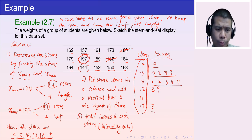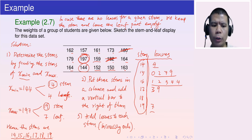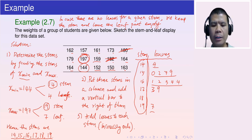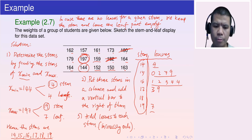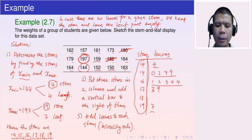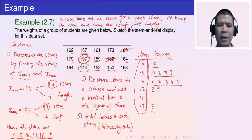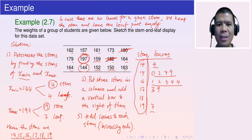To summarize the steps for a stem and leaf display: Step 1, determine the stems by finding stems of the minimum and maximum values. Step 2, put the stems in a column and add a vertical line to the right. Step 3, add leaves to each stem in increasing order. That's all for today's lecture. I will see you in the next one. Thank you.